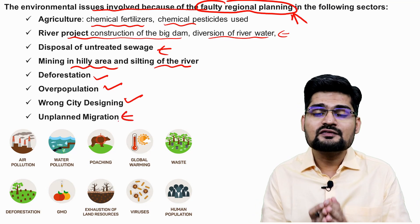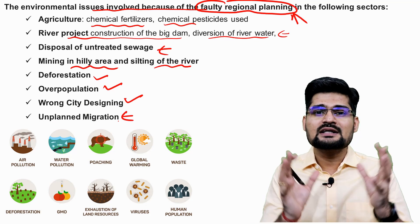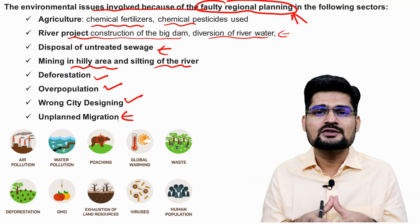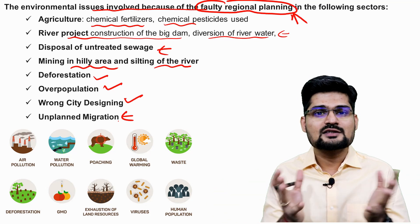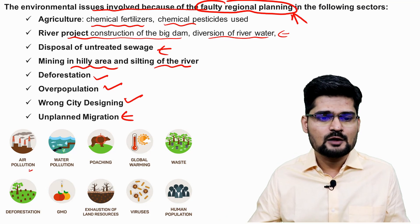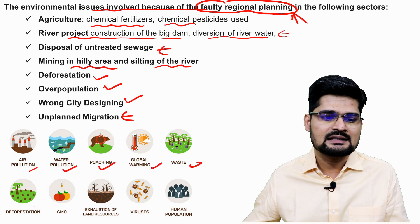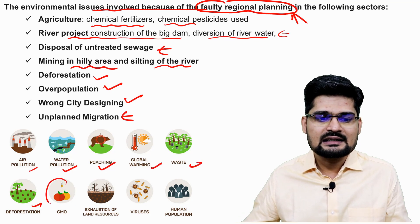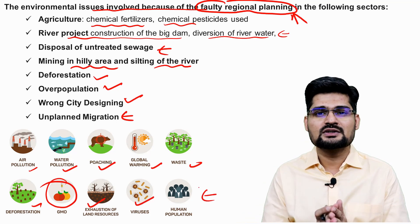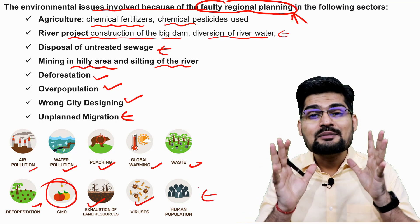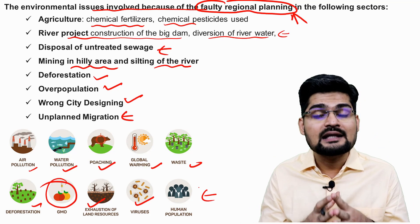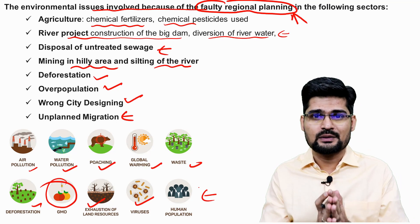In developing countries where only cities are being developed, rural countryside remains underdeveloped, and unplanned migration leads to overloading of cities. When a city is overloaded, its environment gets polluted in all dimensions. The ten key challenge dimensions include: air pollution, water pollution, poaching, global warming, waste, deforestation, genetically modified organism seeds, exhaustion of land resources, viruses, and human population.